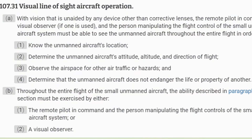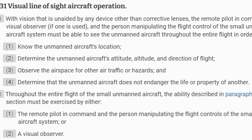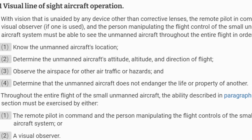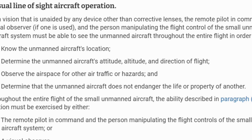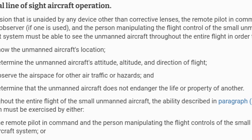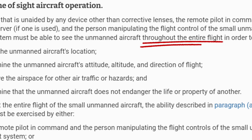In the drone community you hear a lot about flying beyond visual line of sight, or BVLOS. So what does that really mean and what can you do or not do? Let's start with Part 107.31, visual line of sight aircraft operation. This part states that with vision unaided by any device other than corrective lenses, the remote pilot in command, the visual observer if one is used, and the person manipulating the flight controls of the small unmanned aircraft system must be able to see the unmanned aircraft throughout the entire flight.